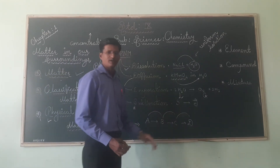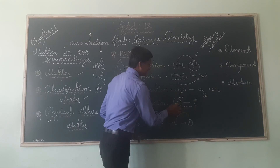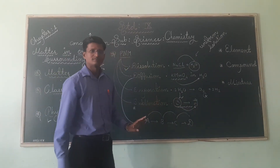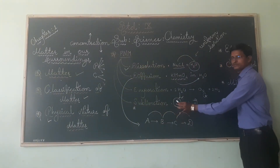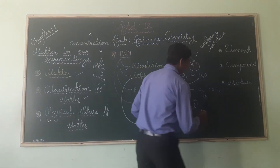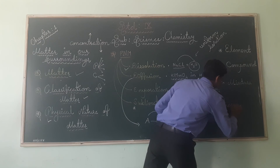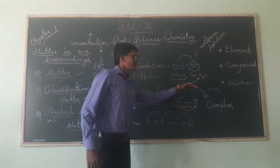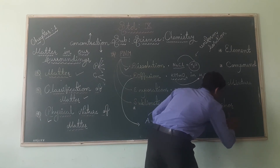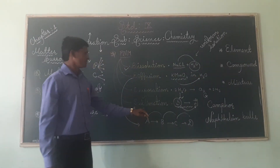The last process is sublimation. Sublimation is when a solid directly converts into gas, and gas directly converts into solid. For example, camphor — kapur — which is a solid, directly transfers into gas without passing through the liquid stage. This is our example of the sublimation process.